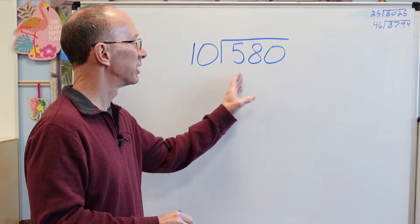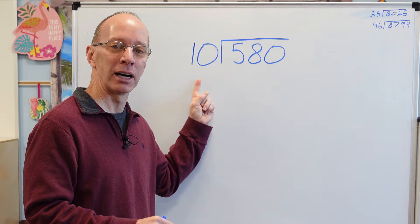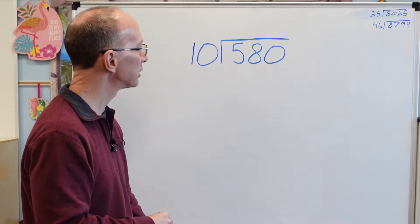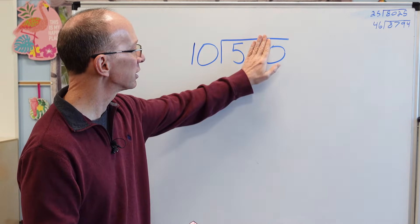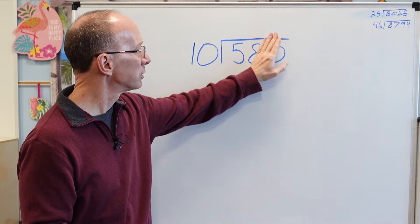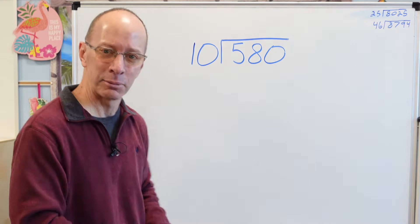First of all, let's take a look at this problem right here. We have 580 divided by 10. So I'm just going to take this very slow, and I'm just going to look at just this number. Can I put 10 into 5? Can't do it, can you? So let's move this over. Can I put 10 into 58? Yes, you can. How many times?